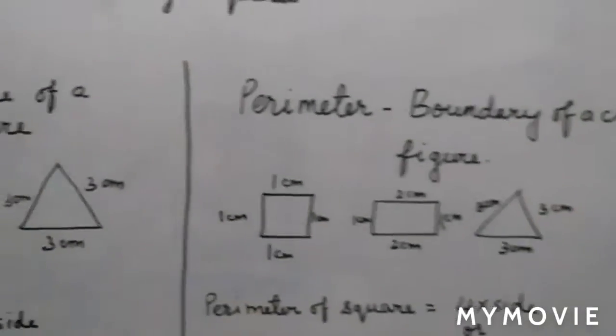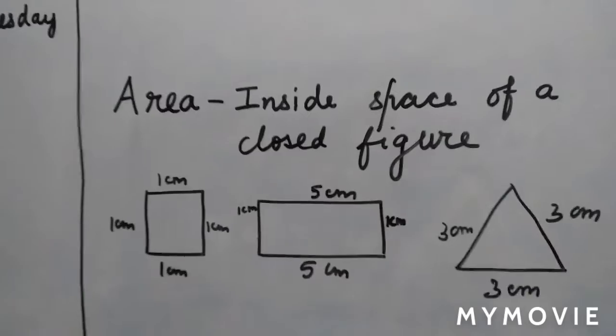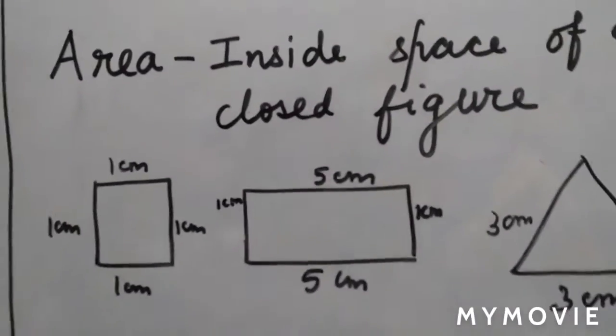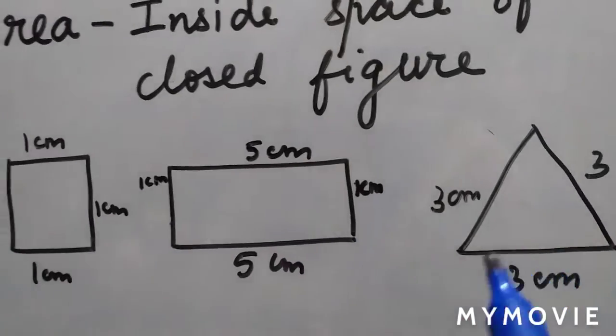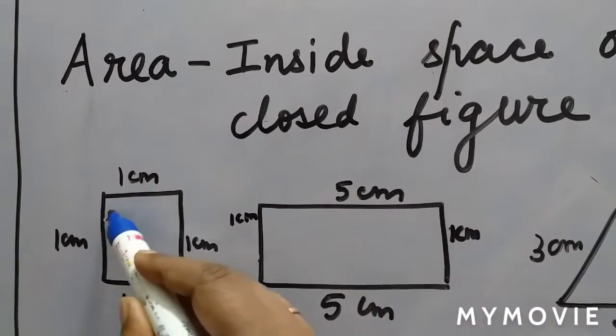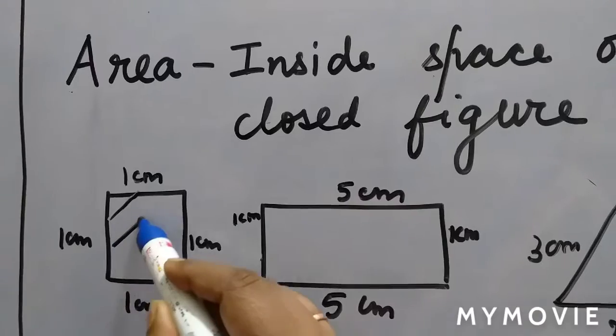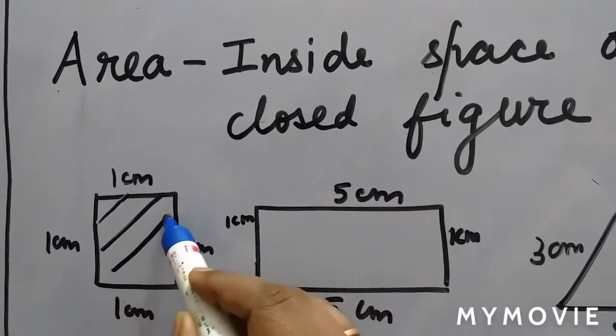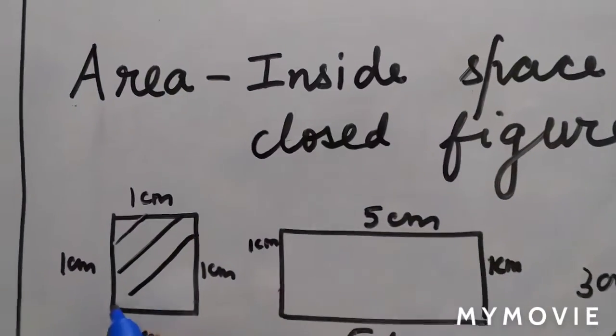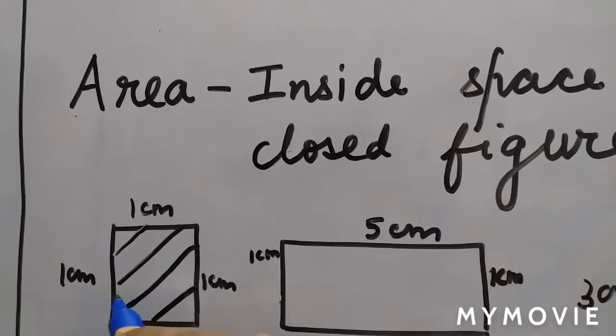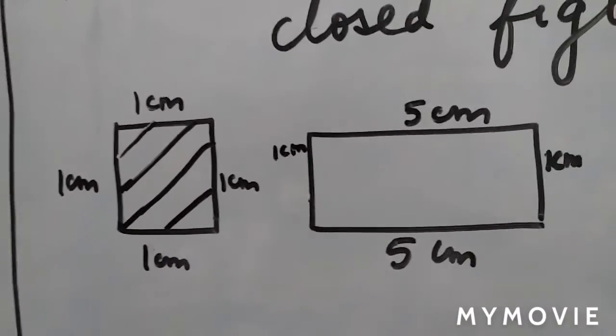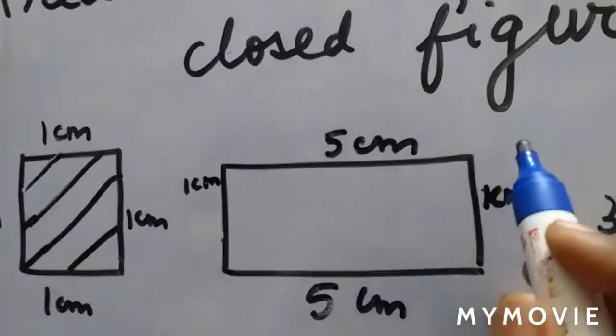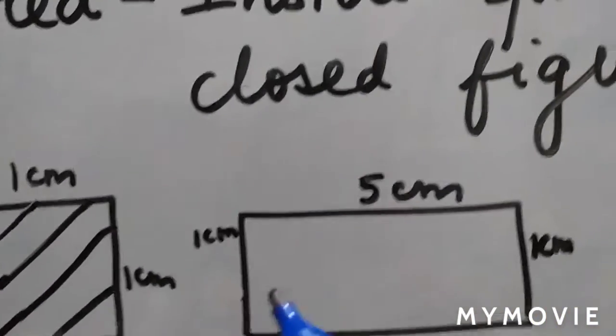Area is the inside space of a closed figure. Now you can see that this is a square, rectangle, and a triangle. The space which I am shading, if you can see, this is a closed figure. The shaded portion shows the area. Similarly, this is closed, this is a closed area which is the area.